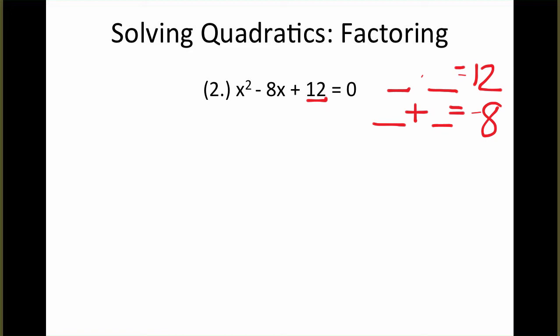So, let's see, what two things would work in this case? I think the numbers are negative 6 and negative 2. And so our two factors of this expression will be x minus 6 and x minus 2.